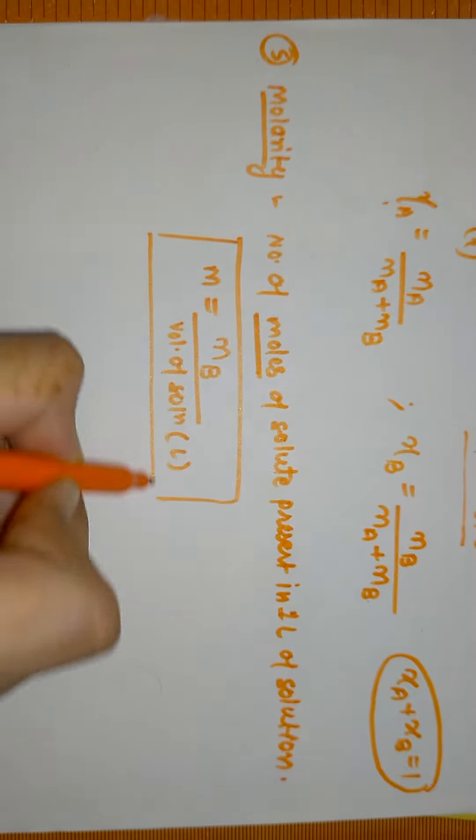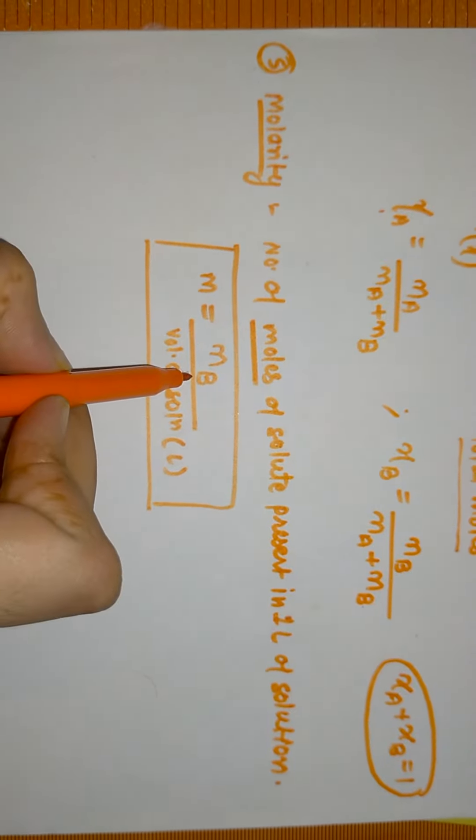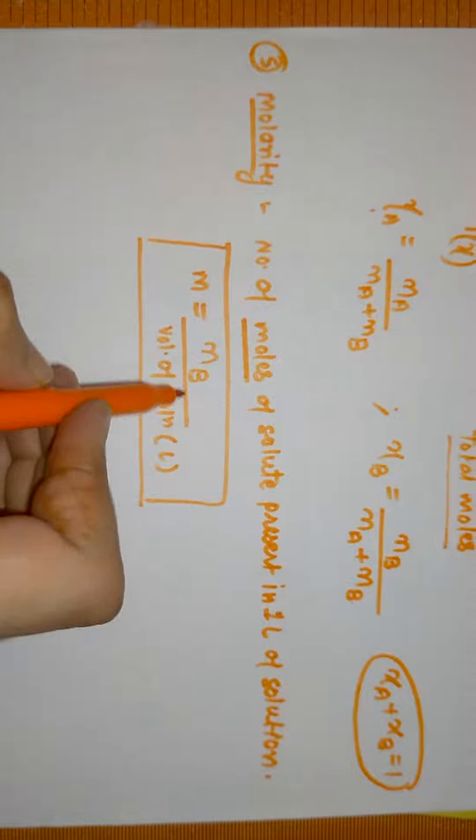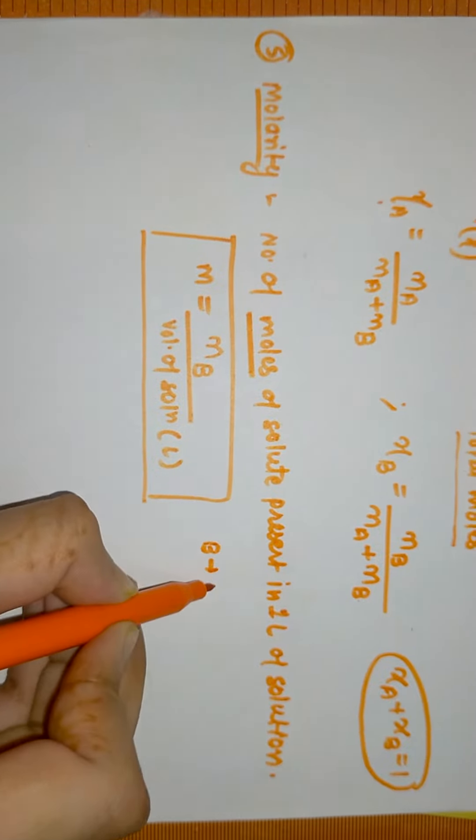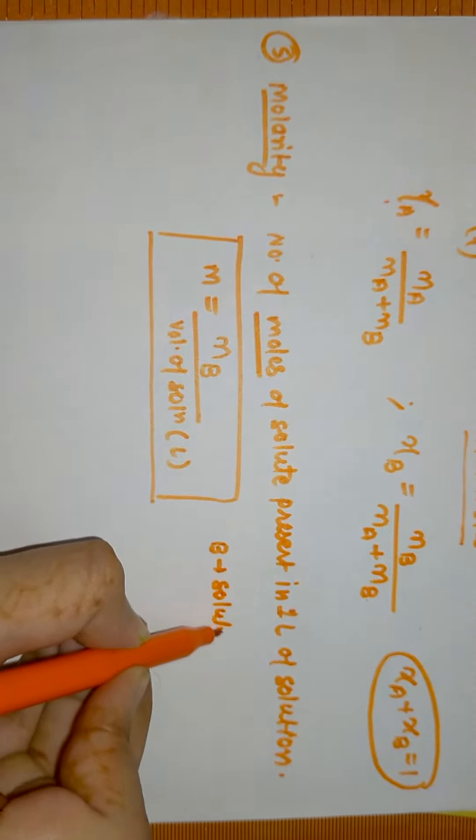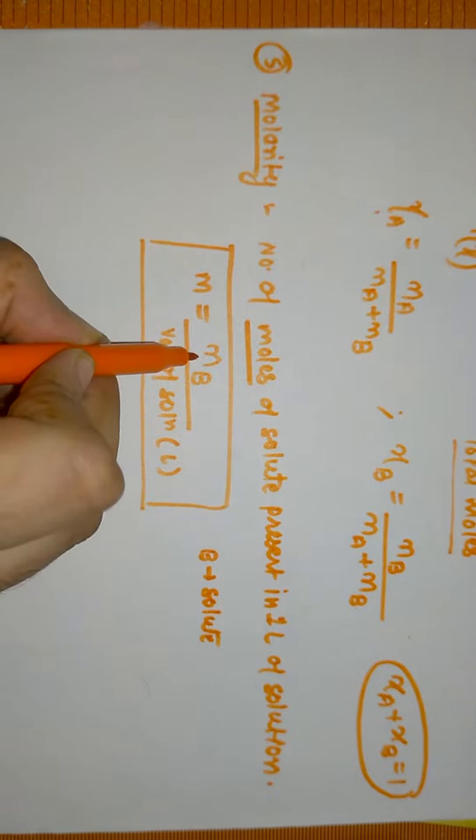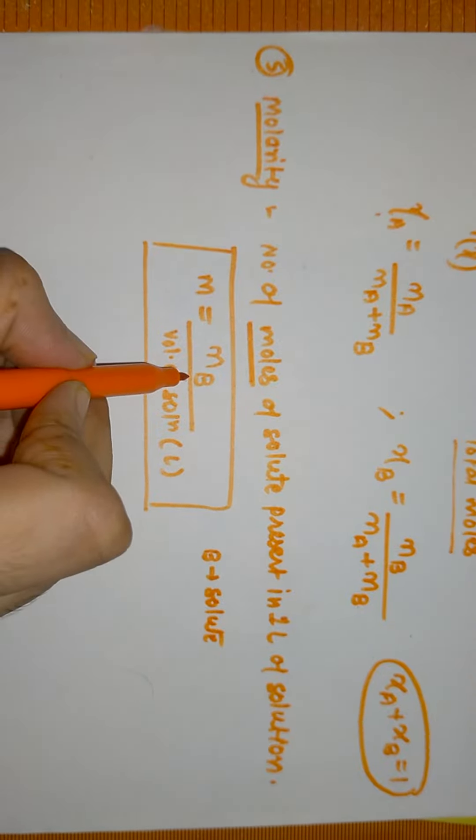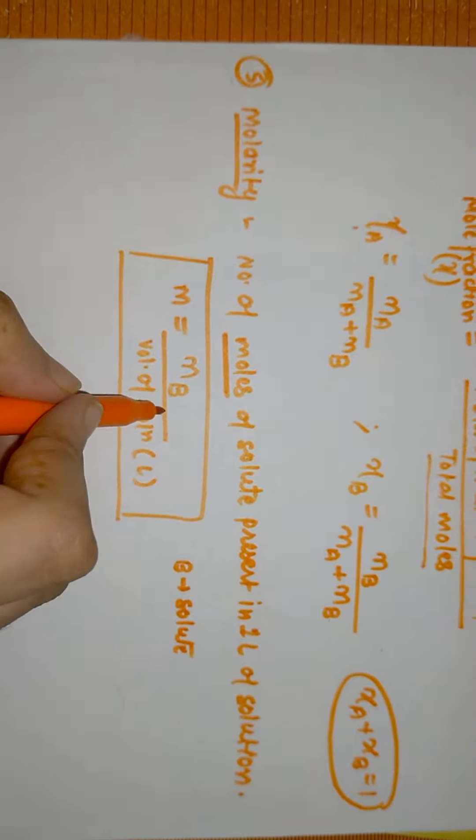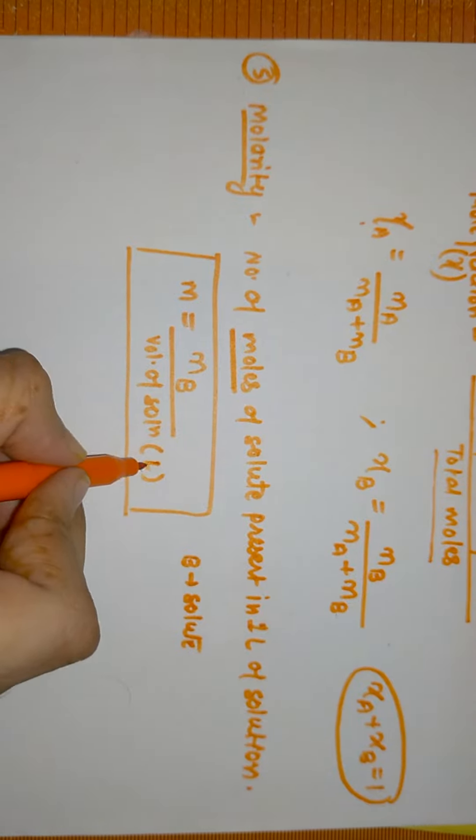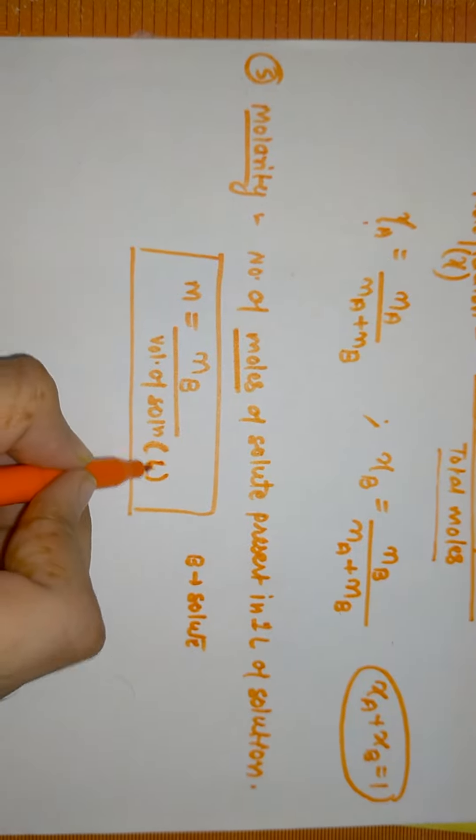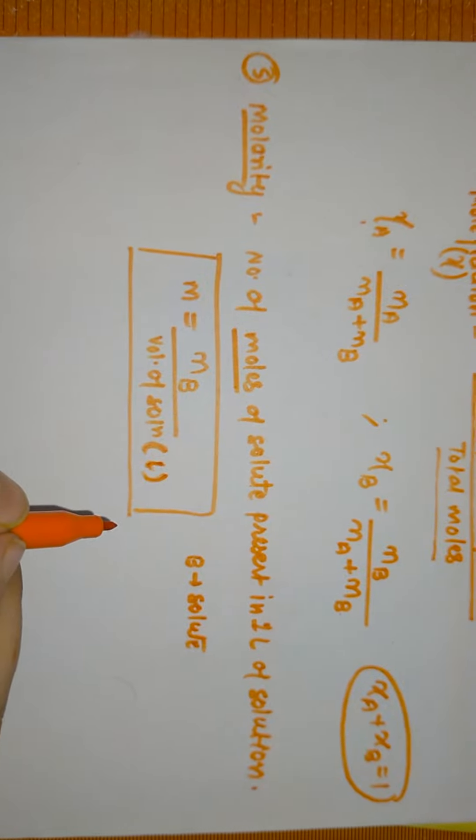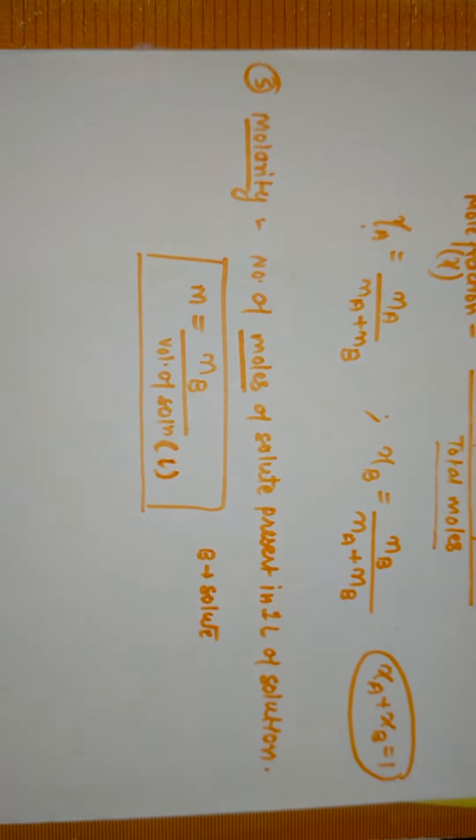We need to focus on the number of moles of solute. When we write B, it means we are talking about solute. So here is the number of moles of B divided by volume of solution in liters. We need to focus on the volume in liters. This is molarity.